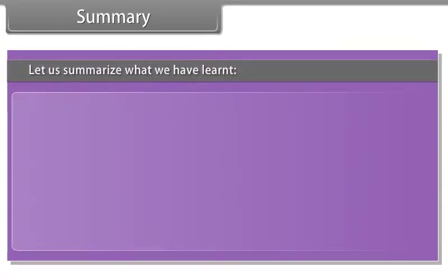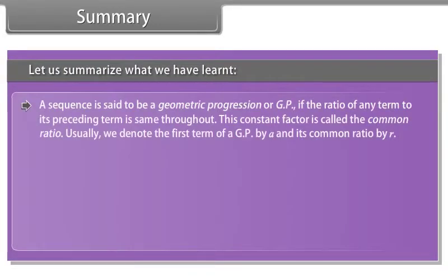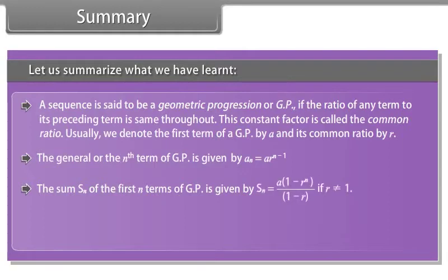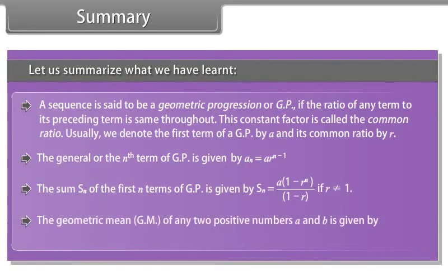A sequence is a geometric progression or GP if the ratio of any term to its preceding term is the same throughout; this constant factor is called the common ratio, denoted R, with first term A. The nth term of a GP is Aₙ = A·R^(n−1). The sum Sₙ of the first n terms is given by the formula. The geometric mean of two positive numbers A and B is G = √(AB), meaning A, G, B is a GP.